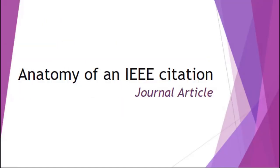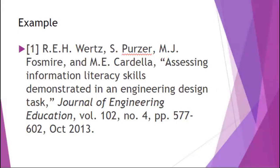Now let's look at the anatomy of an IEEE citation. We're going to look at a journal article and go through each part that is necessary to create a valid citation for your works cited page. This example has all the necessary parts to make a valid citation. All of this information is included so that whoever is reading your paper can look at this citation and know exactly where it came from — whether they search their library, Google Scholar, or elsewhere.